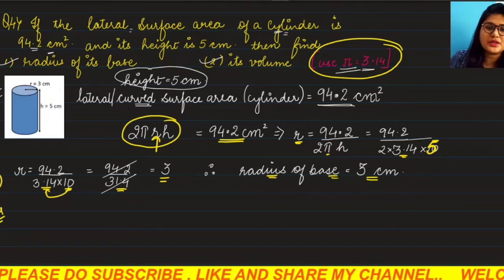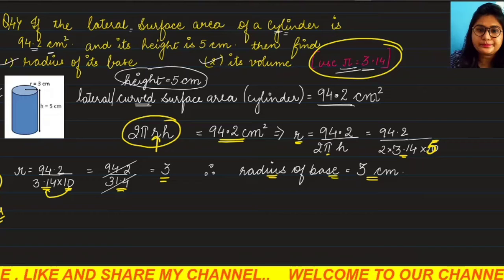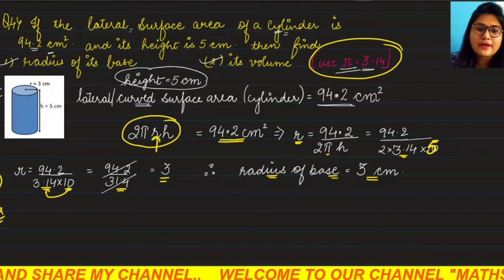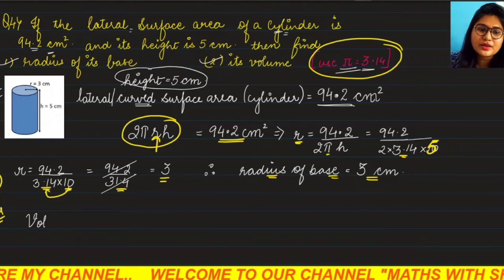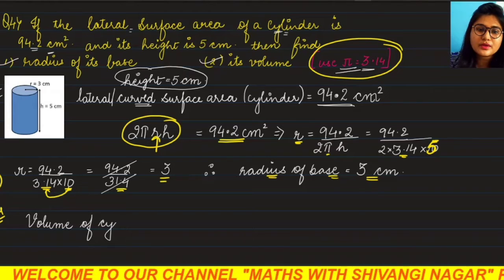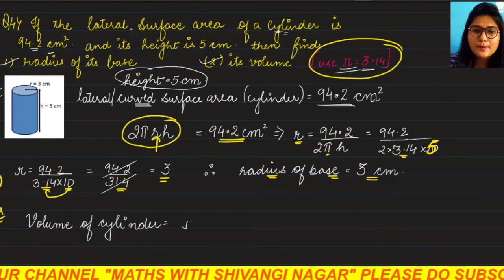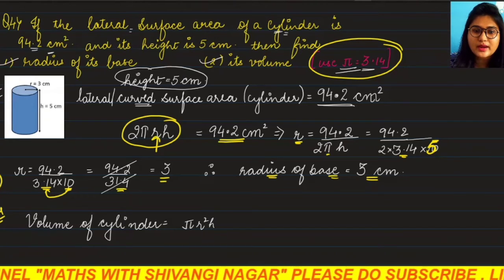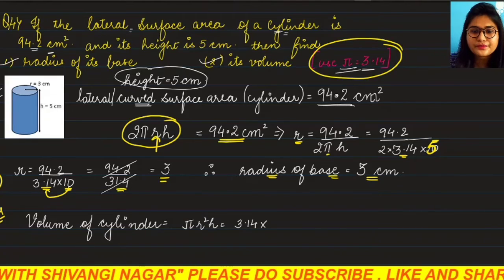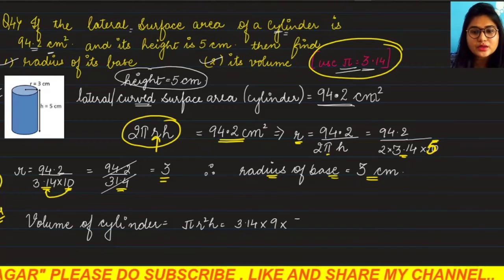Volume of cylinder - what is the formula? Volume of cylinder is πr²h. π ka value 3.14, r ka value 3 × 3 that is 9, and h ka value is 5.